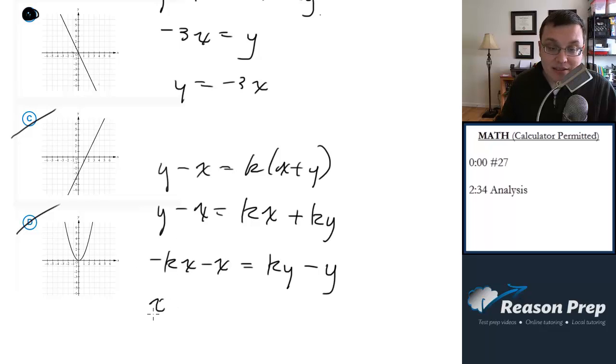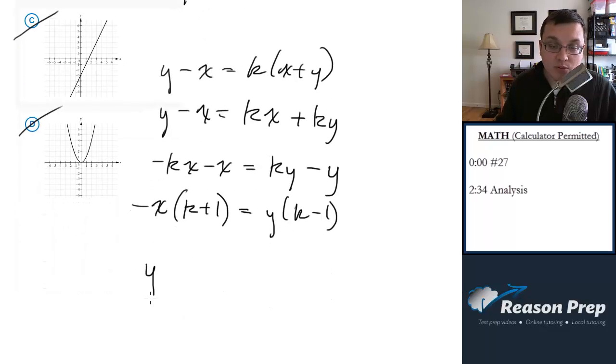Factor out an x out of this side. Factor out a negative x. So we get k plus 1. Factor out a y, we get y times k minus 1. Let's divide both sides by k minus 1. We get y equals k minus 1 over k plus 1. This is all negative, and then this is x.